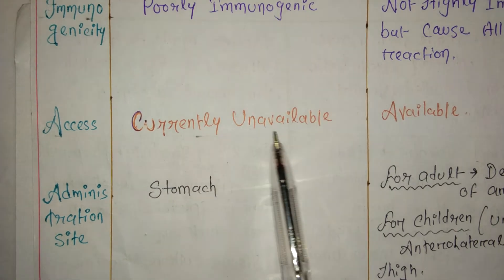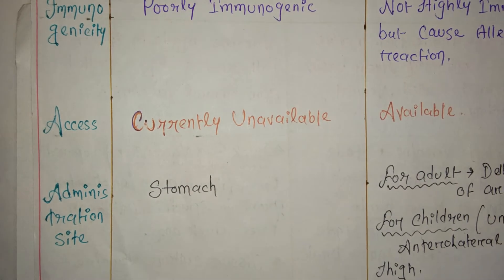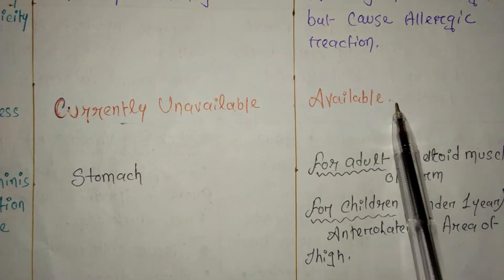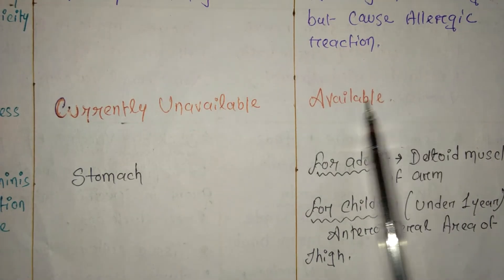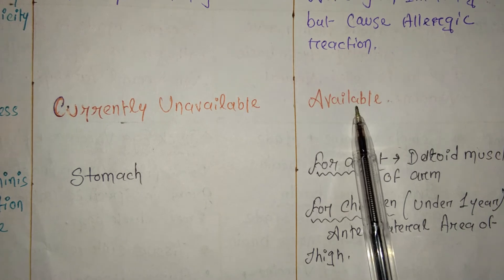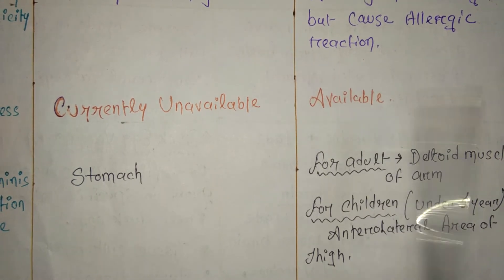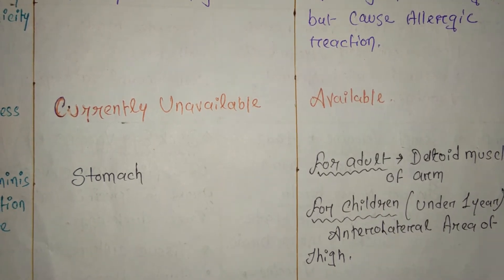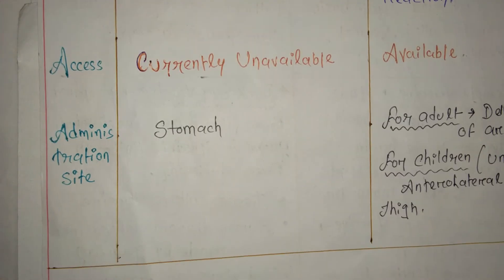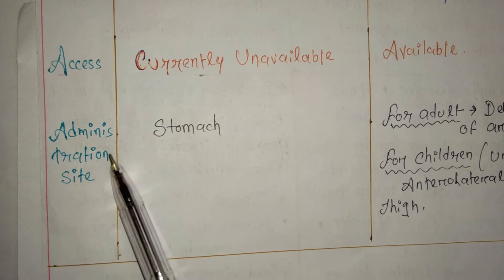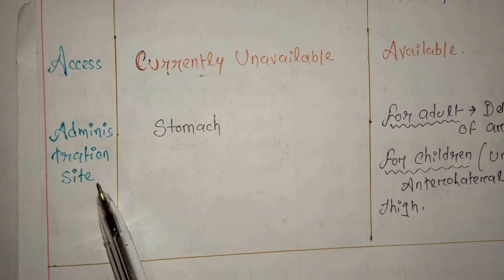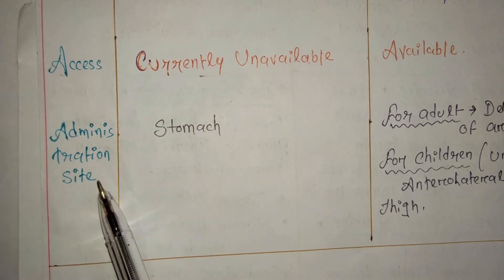Regarding availability: the neural vaccine is currently unavailable because it is very harmful. The non-neural vaccine is currently available.